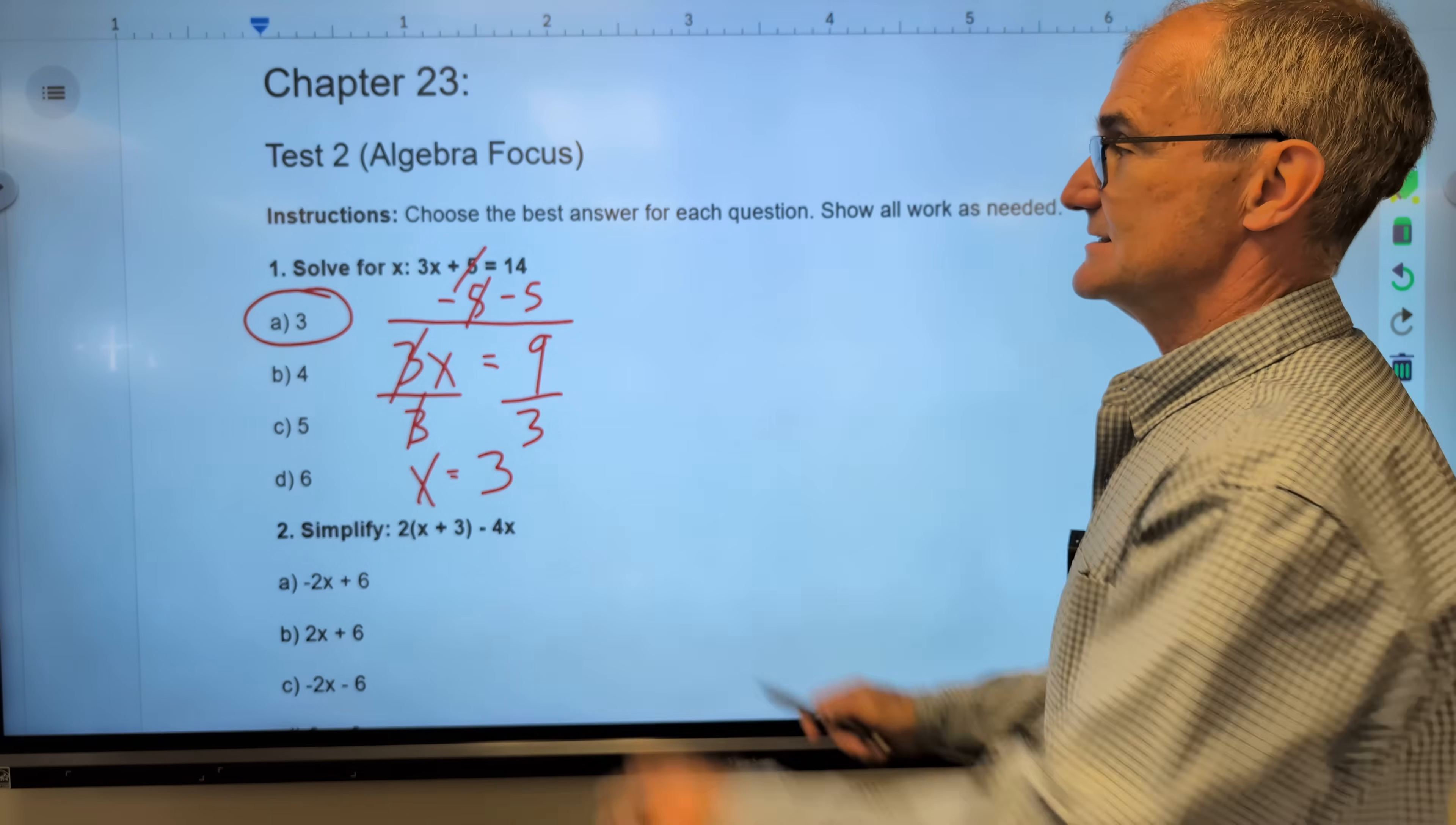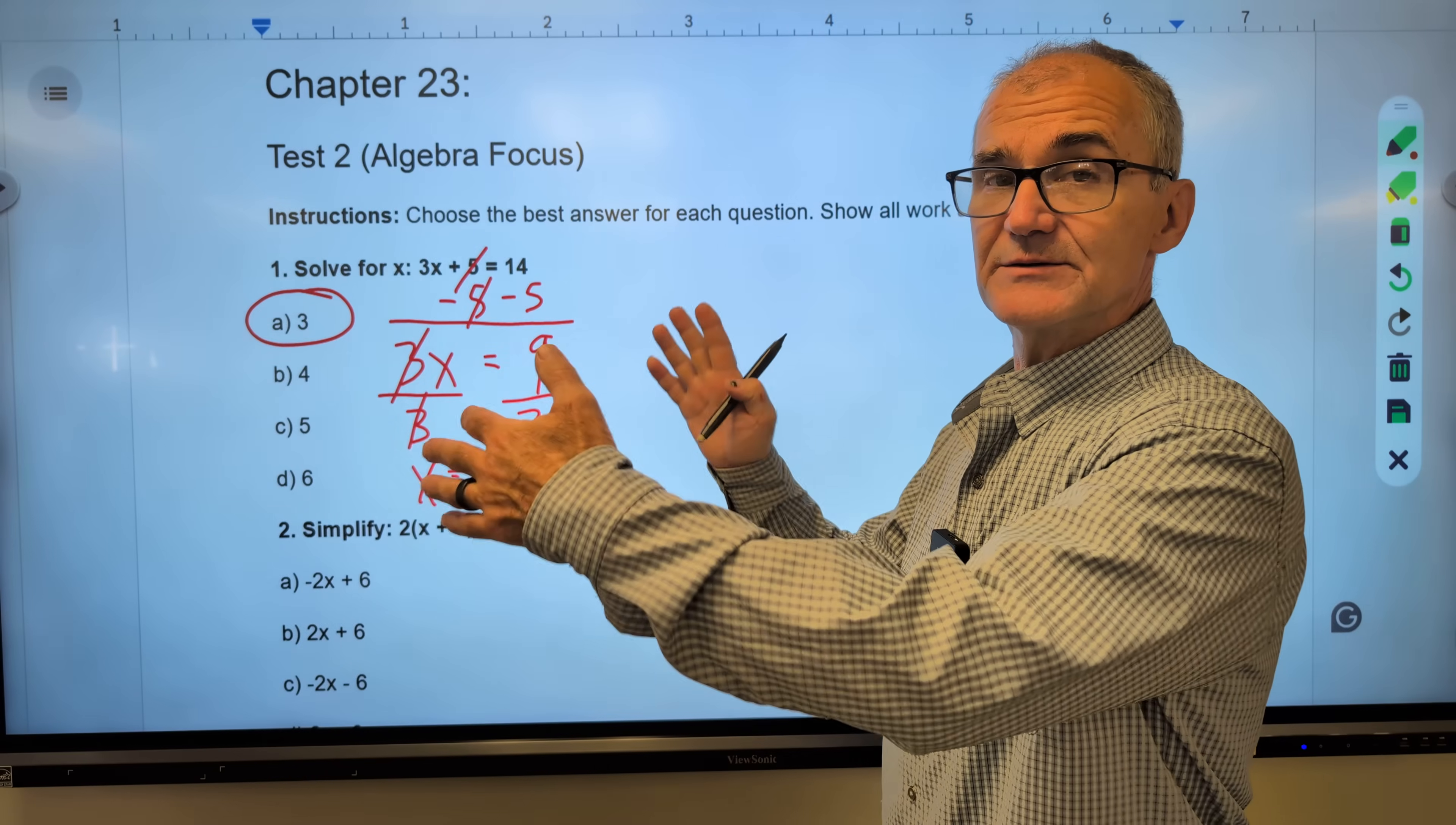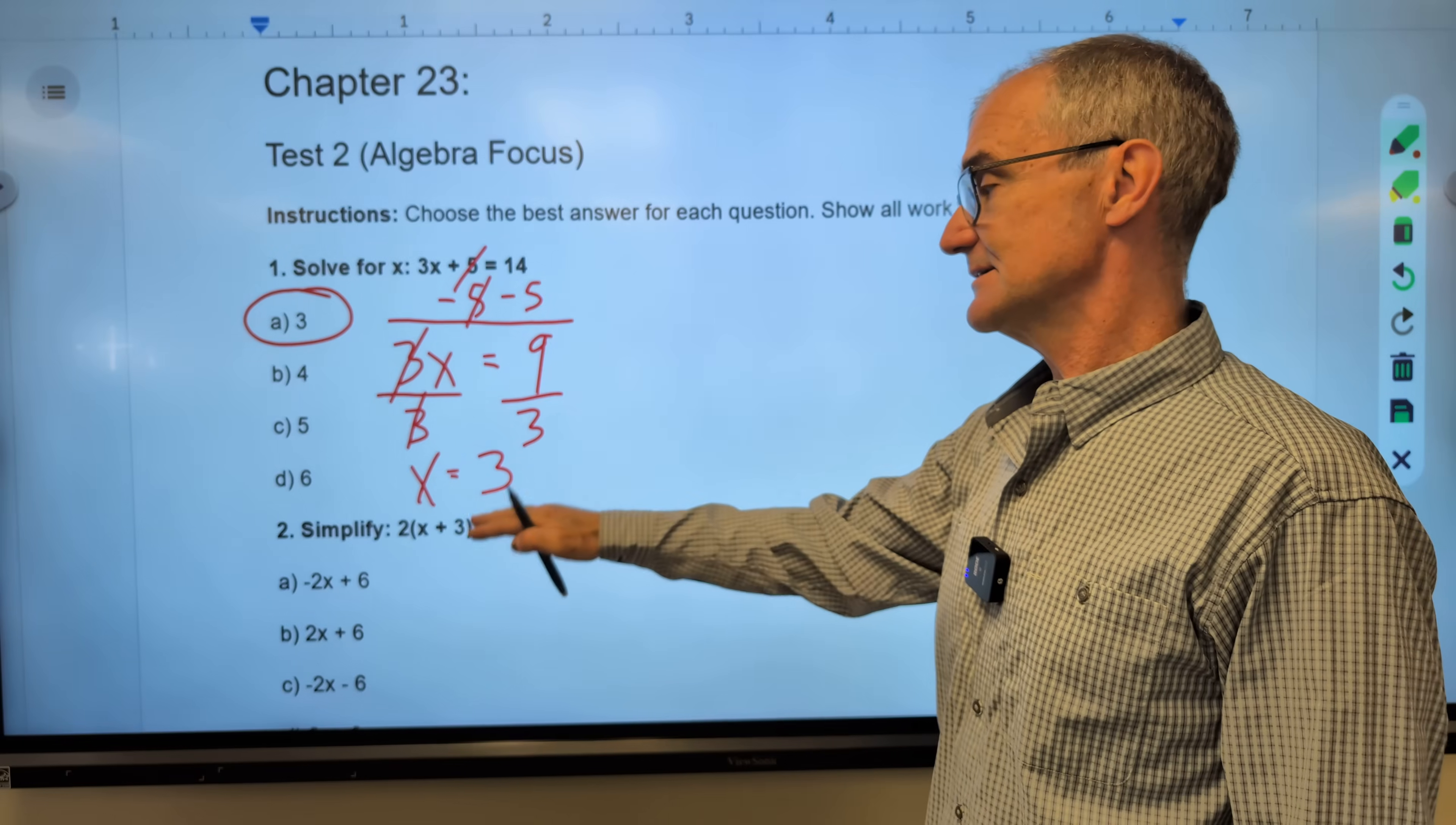This is an equation, and I am using reverse operations to get the x by itself. This is an expression. All I can do in an expression is get all of my similar terms together. I am using the rules of algebra to do that, but I can't do whatever I want to both sides because there are no both sides. There is no equal sign. So with that said, let's jump down to number 2 and simplify that expression.